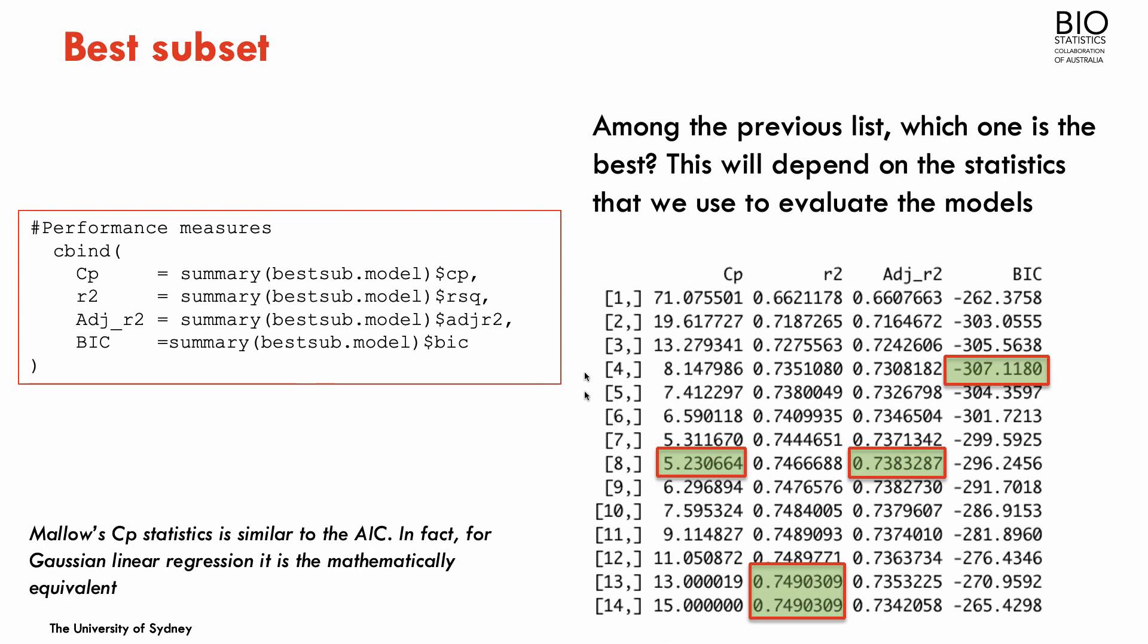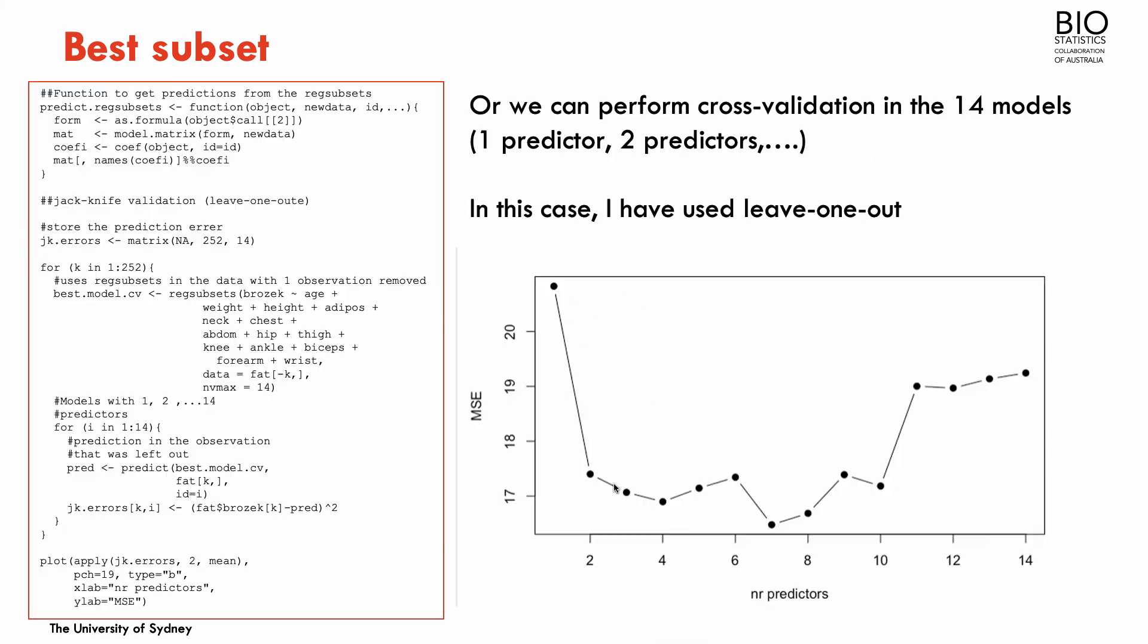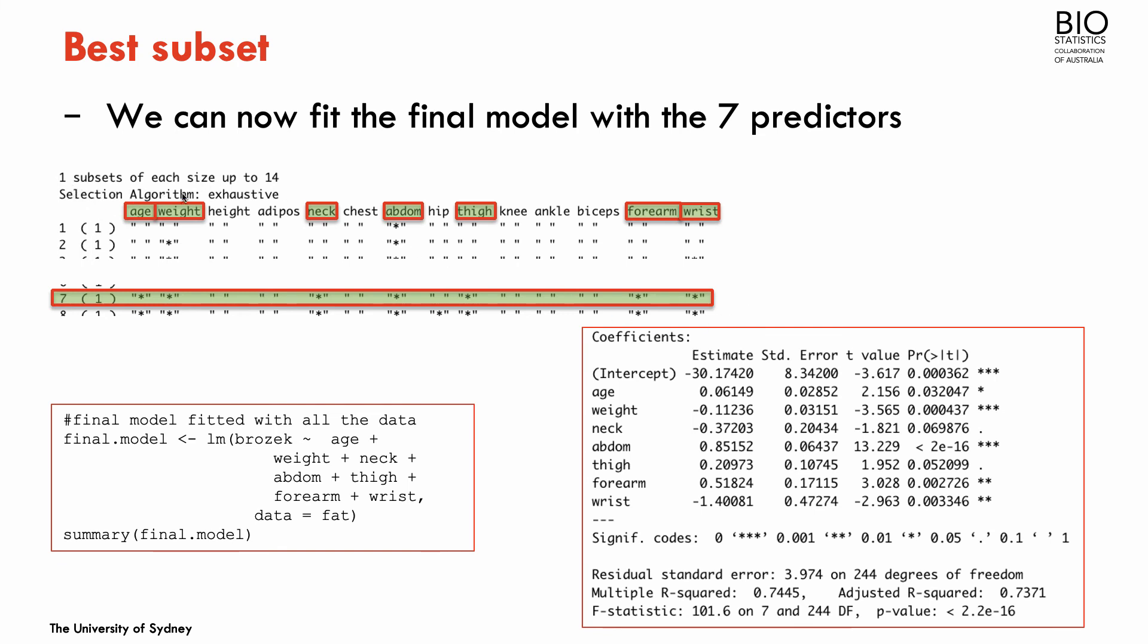Another possibility is having these 14 potential best models is to now cross-validate. And here I've done a jackknife cross-validation, so leave one out. And for models including only one predictor, two predictors, three predictors, four predictors, remember that this is the best model that the regsubsets function gave us, with one predictor, the best with two predictors, and so on. And I compute the mean square error cross-validation for each one of these models. And we can see that the model with seven predictors is the one that has lower mean square error given by the cross-validation.